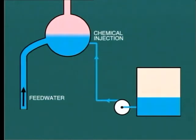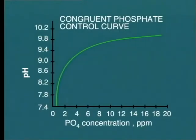It may even be necessary to use monosodium phosphate in some cases in order to hold the pH level down to the desired level. This curve, known as the congruent phosphate control curve,